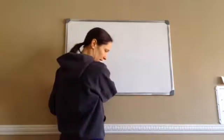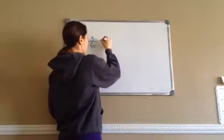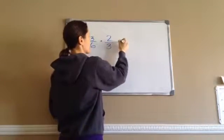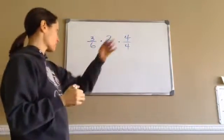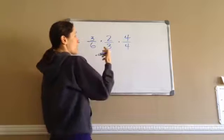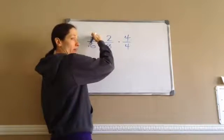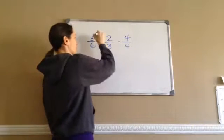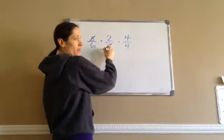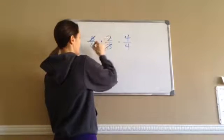We're used to working with something like 3 sixths times 2 thirds times 4 over 4, and you work these problems out. Let's just pretend you can take any numerator and cancel it out with any denominator. So this 3 and this 3 cancel out. Let's go ahead and do this.